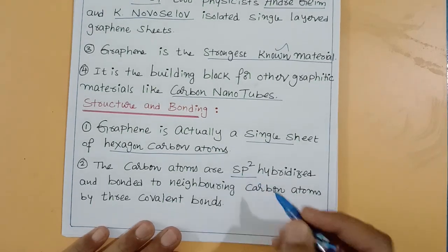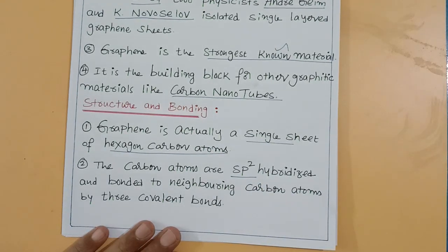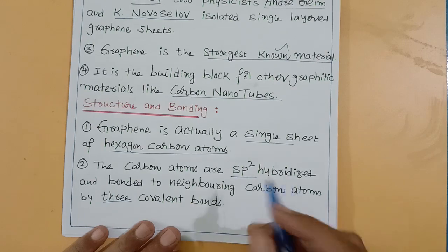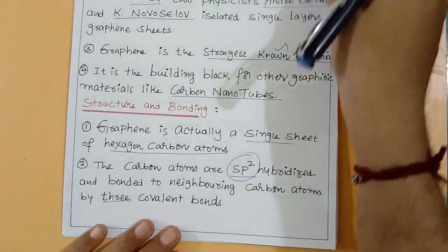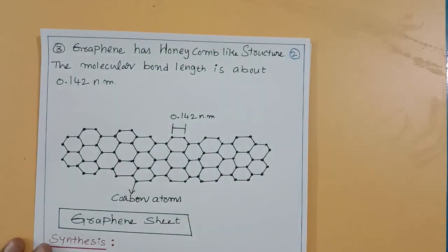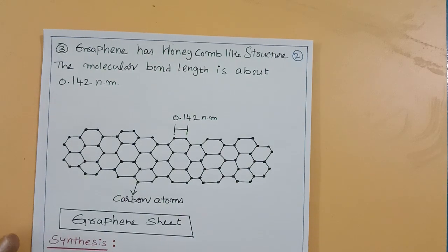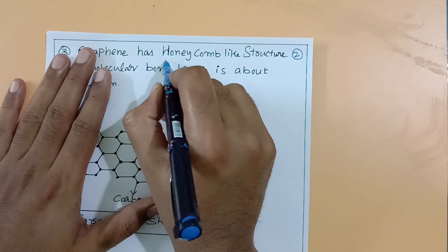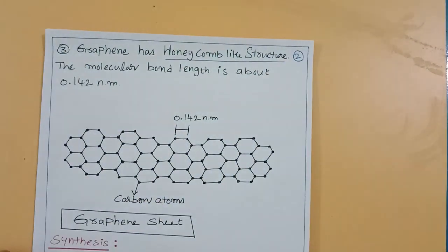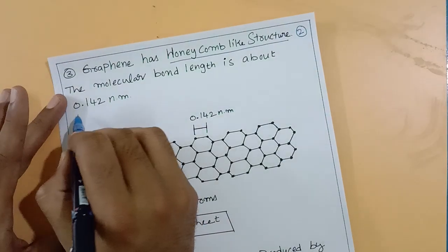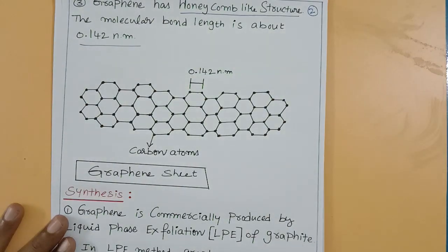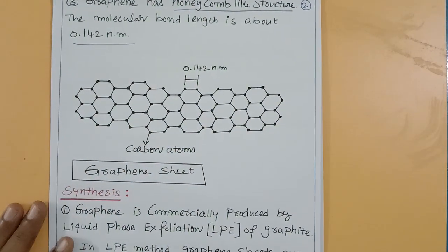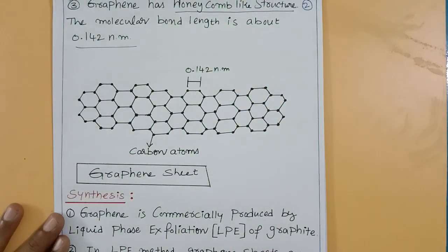The carbon atoms are sp2 hybridized and bonded to neighboring carbon atoms by three covalent bonds. Graphene has a honeycomb-like structure. The molecular bond length is about 0.142 nanometers. This is the structure of graphene — a single hexagonal sheet. The carbon atoms are sp2 hybridized.